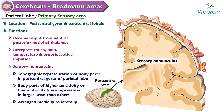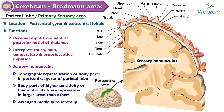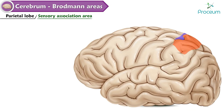Sensory homunculus arrangement (medial to lateral): genitals, toes, feet, leg, hip, trunk, neck, head, shoulder, arm, elbow, forearm, wrist, hand, little finger to thumb, eye, nose, face, lips, oral cavity, tongue, pharynx.